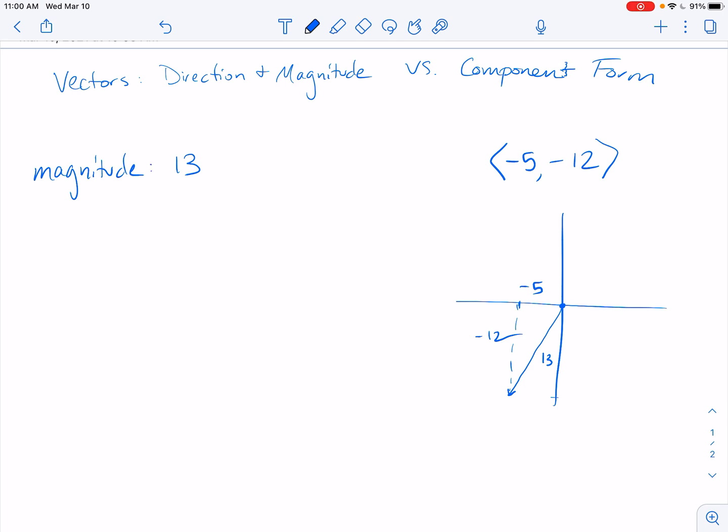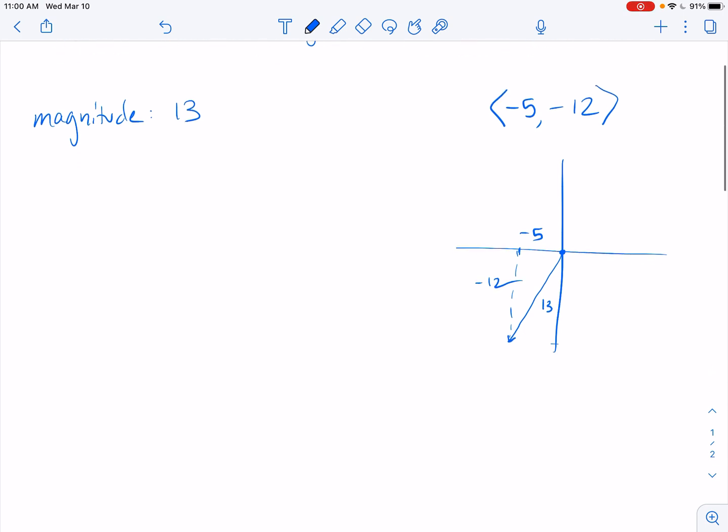Now when we want to find theta, you have to be careful on how you describe this, how you label it, and that's why I'm making this video. So here's what I see. If this is theta right here, then I have tangent of theta. Let's go ahead and we'll call it theta. This is going to be equal to opposite, so negative 12 over adjacent is negative 5.